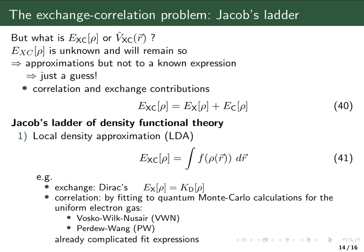The question is, what is the correct form for the exchange correlation functional or the exchange correlation potential? The bad news is that the exact form is unknown and will remain so. So we have to make approximations, but not approximations to something which we in principle know exactly how it looks like, but it's too difficult to calculate. We have to make approximations to something which we actually don't know how it looks like. So we have to guess.